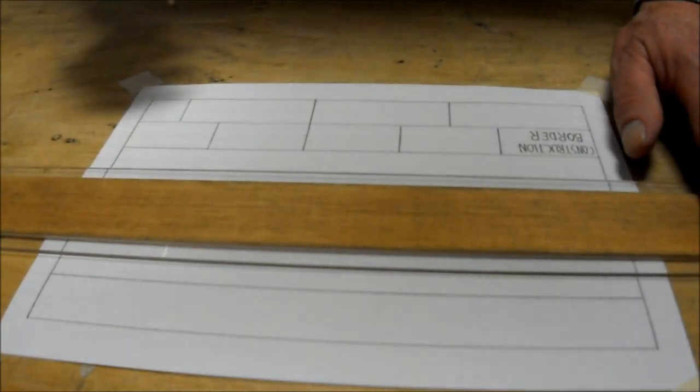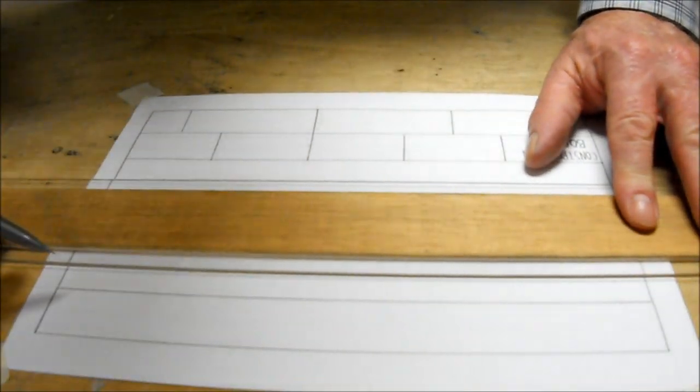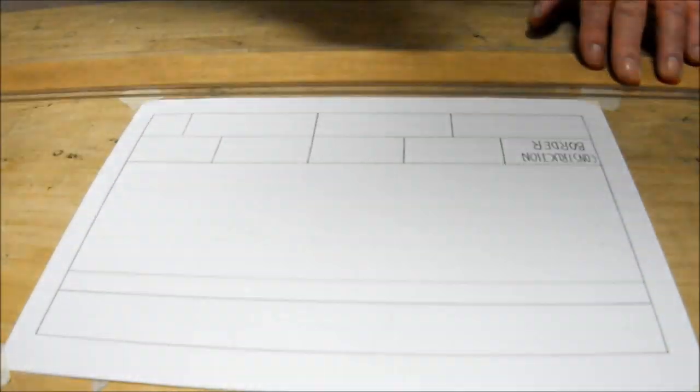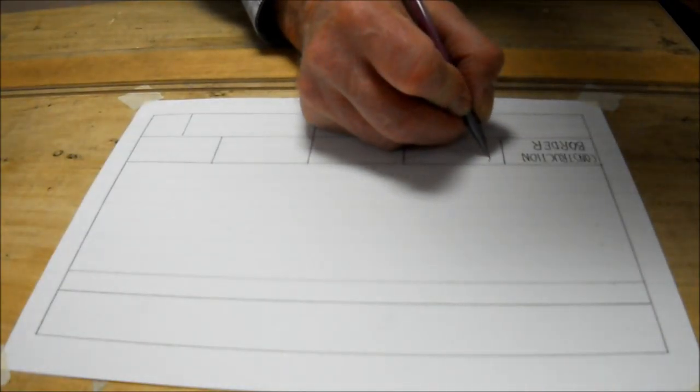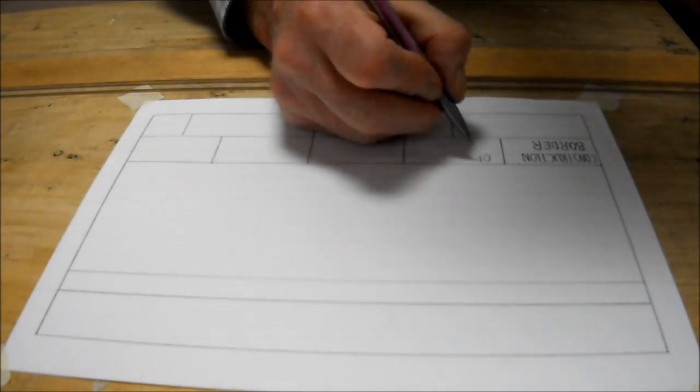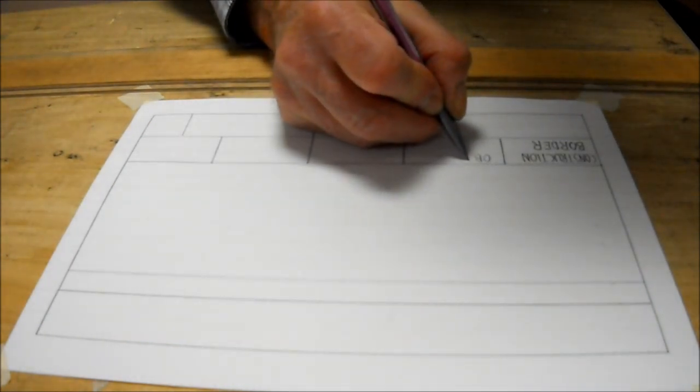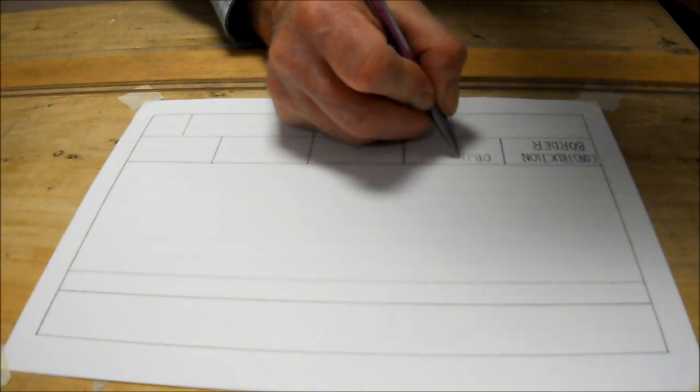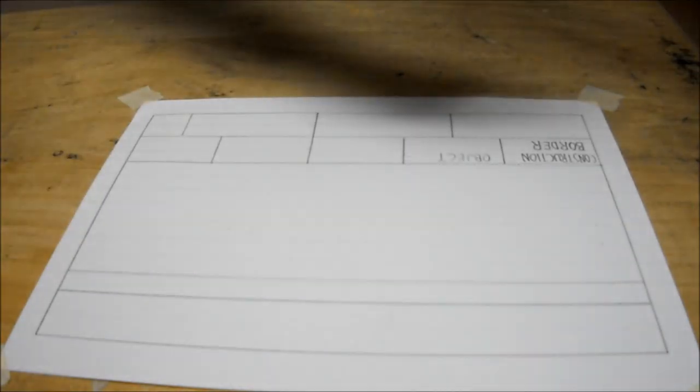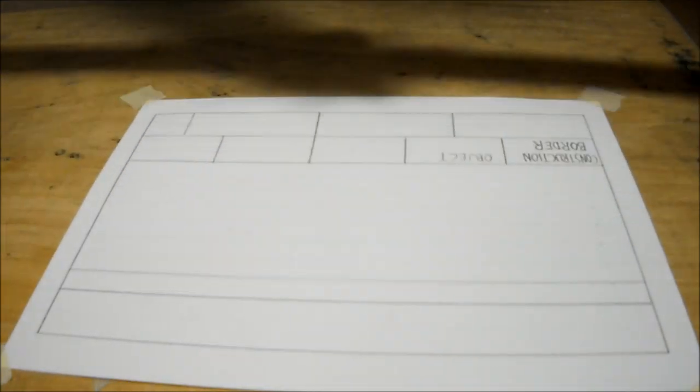Third line is going to be my object line. For my object line, I'm going to use my mechanical pencil because this is just a thin, fine line that comes across. Then, that's going to be an object line. So my third one will be object. When you're using these mechanical pencils and the lead breaks off, it's a good idea to make sure you get it out of the way. Because if it gets underneath the T-square, it gets on your paper, it's going to leave marks.